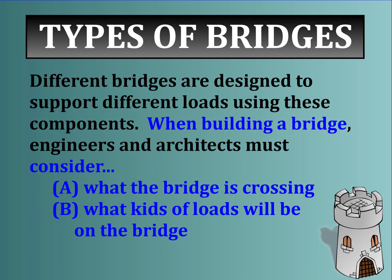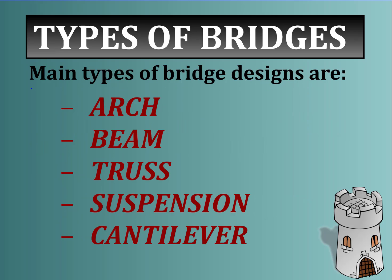Different types of bridges are designed to support different loads using these components. When building a bridge, engineers and architects must consider what the bridge is crossing and what kinds of loads will be on it. The types of bridges mirror the types of components: there's an arch bridge, a beam bridge, a truss bridge, a suspension bridge — which is essentially a beam bridge supported at the top — and a cantilever bridge.